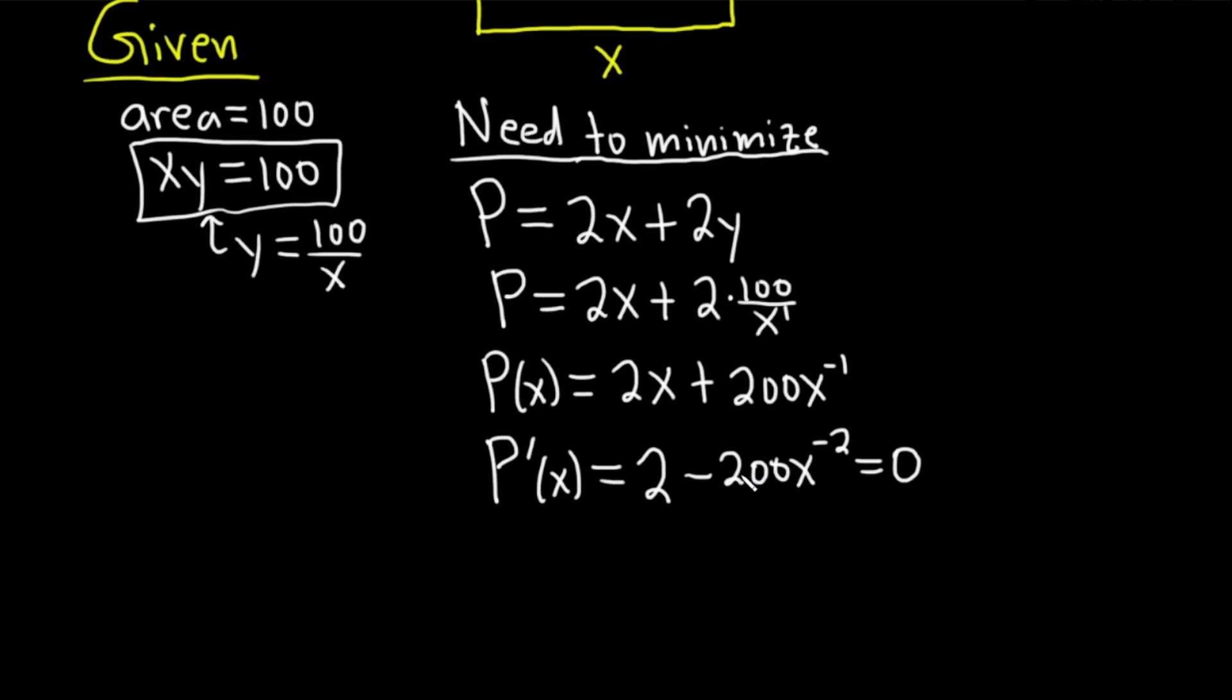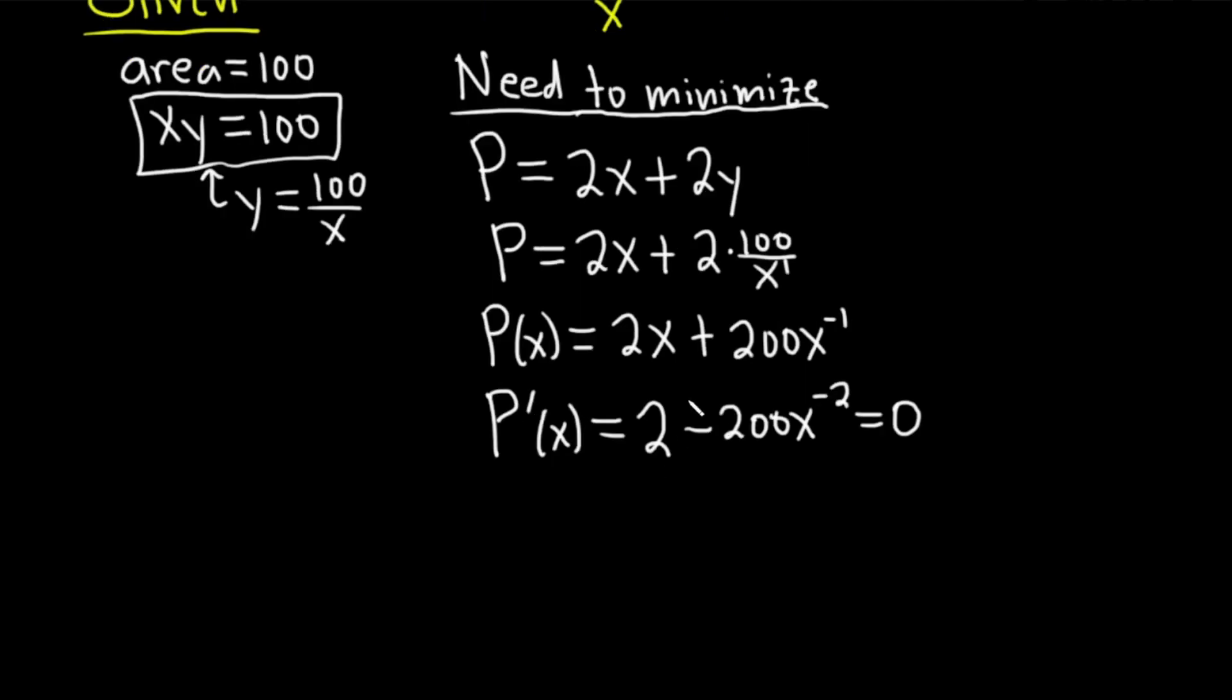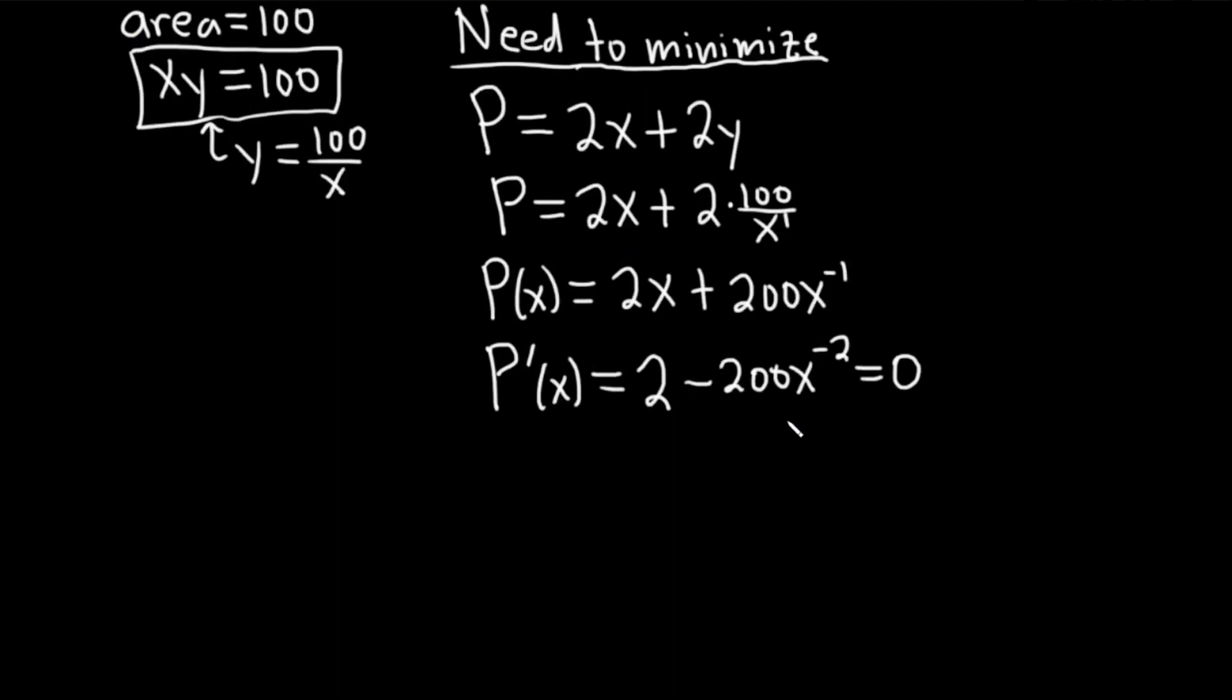We're going to find the critical numbers of this function and use what's called the second derivative test. At this point, what we can do is we can basically add this piece to the other side. So we have 2 equals, adding the 200x to the negative 2, it'll look like this.